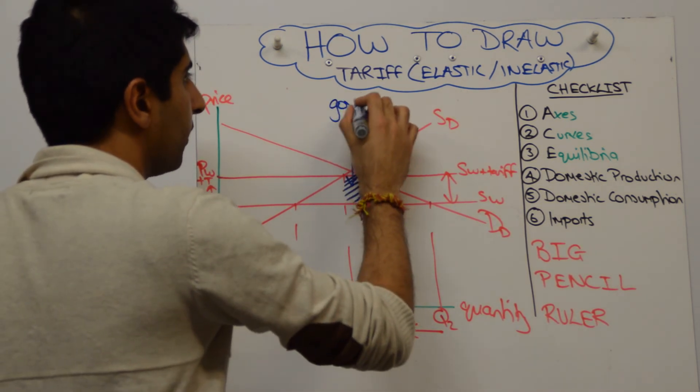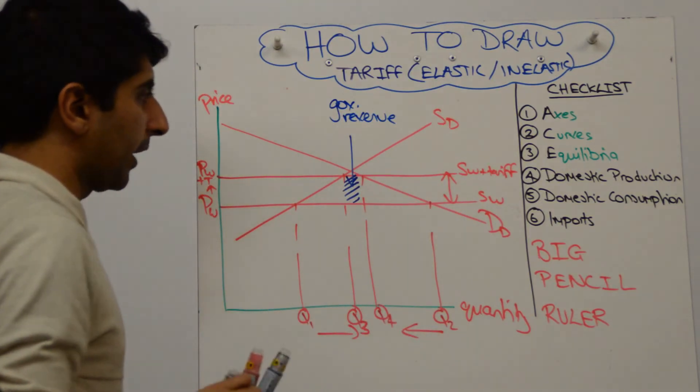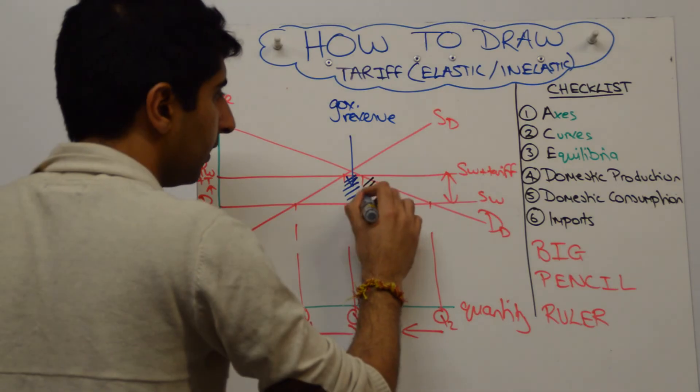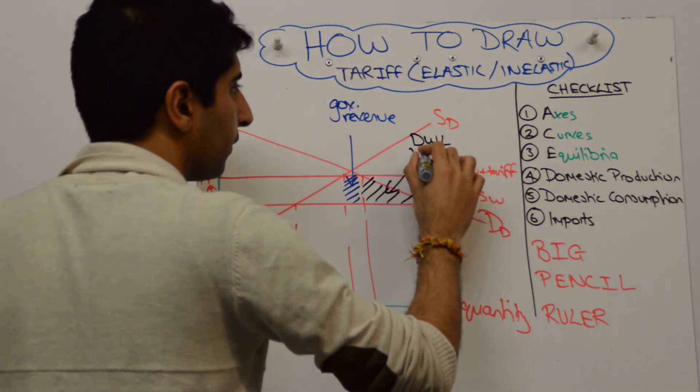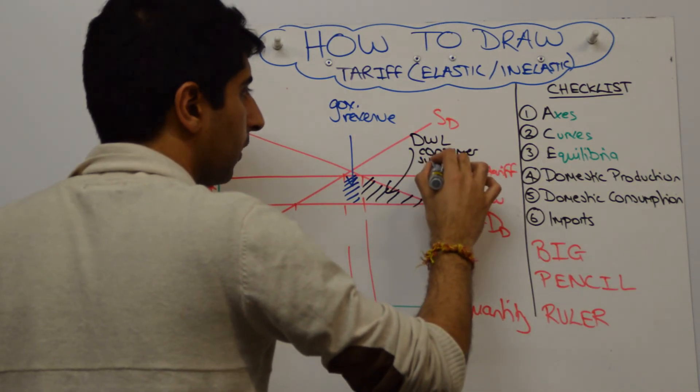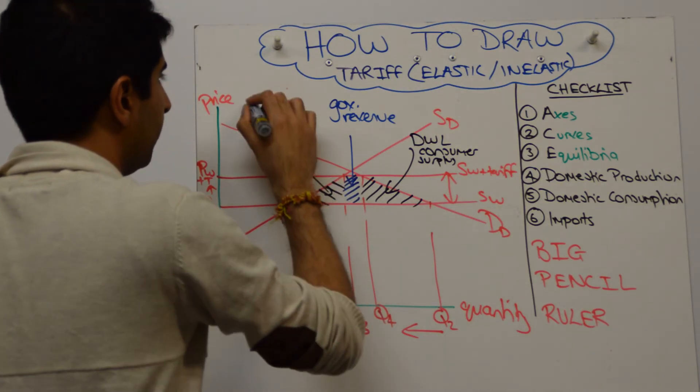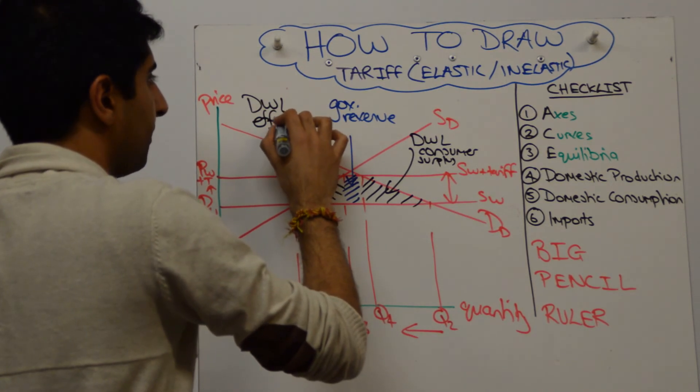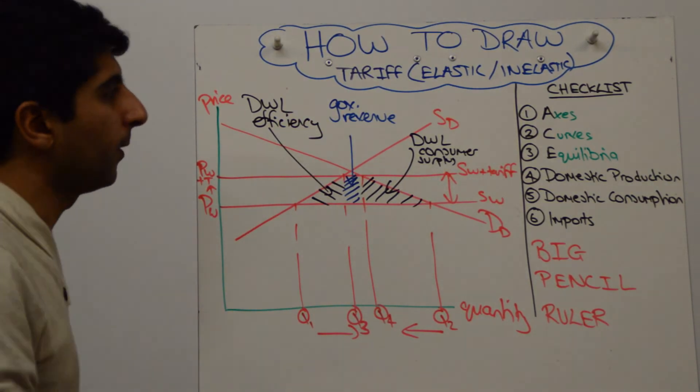So, the blue box is the government revenue. And the two black triangles, this one here, is the deadweight loss of consumer surplus. And this one here, is a deadweight loss of efficiency as domestic producers are producing extra units when they're inefficient at doing so.